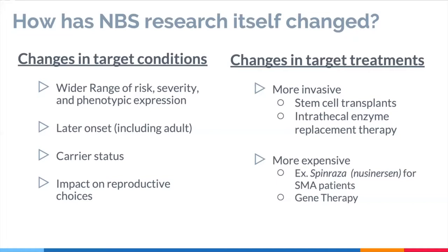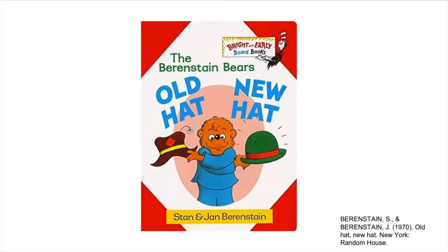Research also targets new treatments that have evolved over time. Some treatments may be more invasive — such as stem cell transplants or intrathecal enzyme replacement therapy — or more expensive, such as Spinraza for SMA patients or gene therapies. As newborn screening research looks at this wider scope, it's important to ask ourselves: have the ethics changed? Have the ethics of newborn screening also evolved?